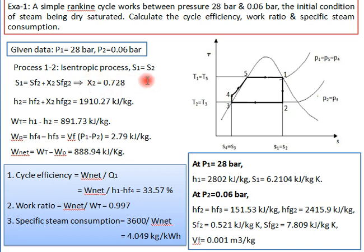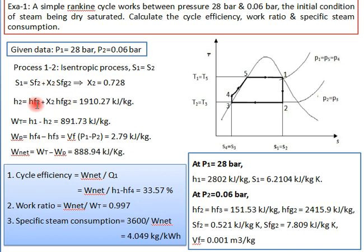At point 2, we find h2 using the relation: h2 = hf2 + x2·hfg2. Substituting hf2 = 151.53, x2 = 0.728, and hfg2 = 2415.9, we calculate the final value of h2 = 1910.27 kJ/kg.